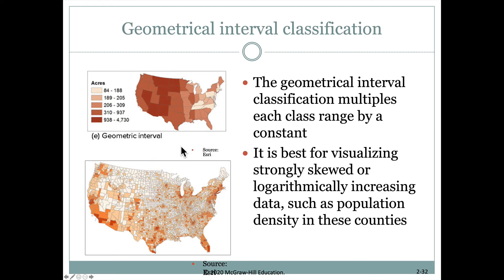Another method is called the Geometrical Interval, which multiplies each class range by a constant so that as we move up through the values the ranges grow — producing a map that looks like this, or at a county level like this. This is really good for strongly skewed data, which is often true of population data, where some areas have extremely high population and many areas have lower population that wouldn't separate into distinct categories without this geometrical interval approach.